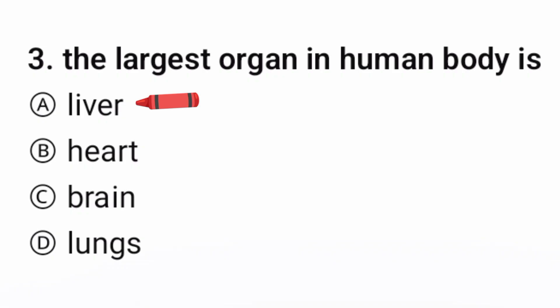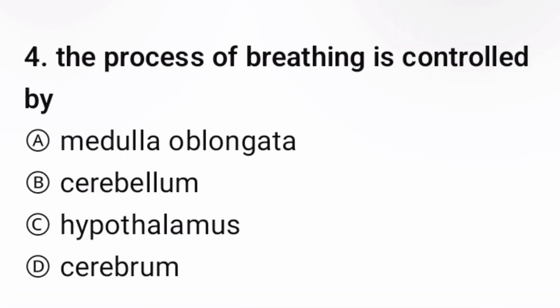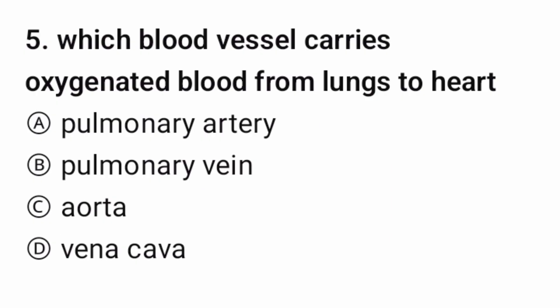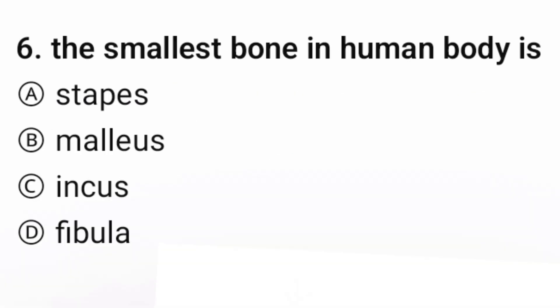Question 4: The process of breathing is controlled by — correct option is A. Question 5: Which blood vessel carries oxygenated blood from the lungs to the heart? The correct option is B. Question 6: The smallest bone in the human body is —